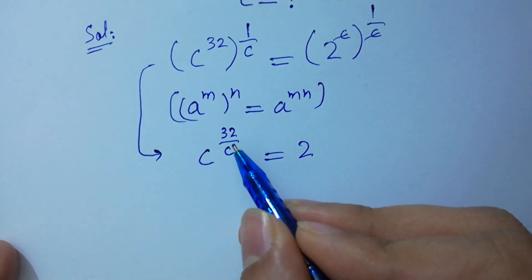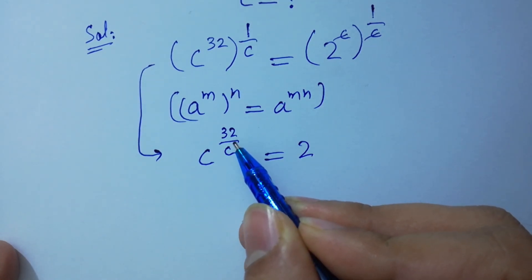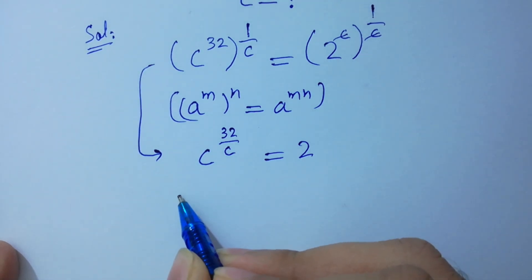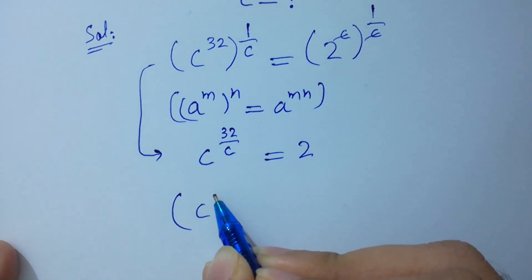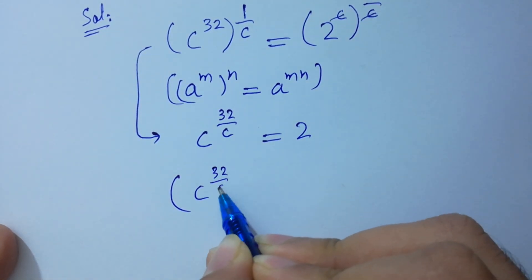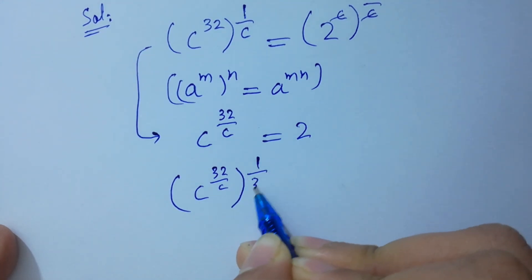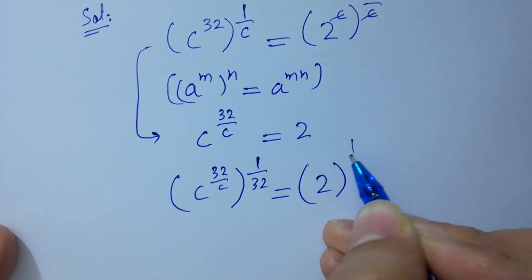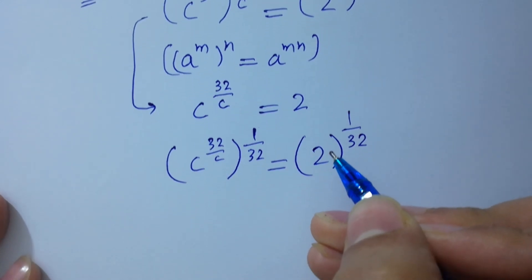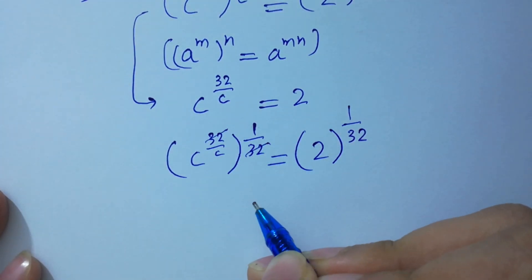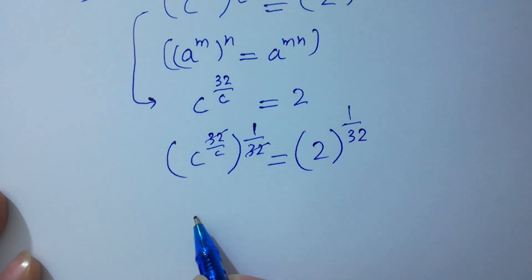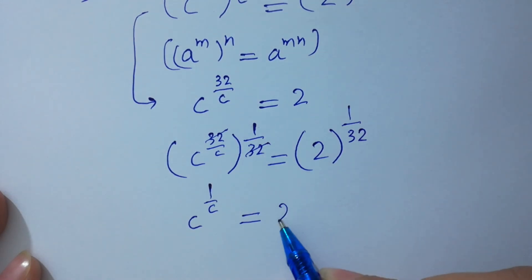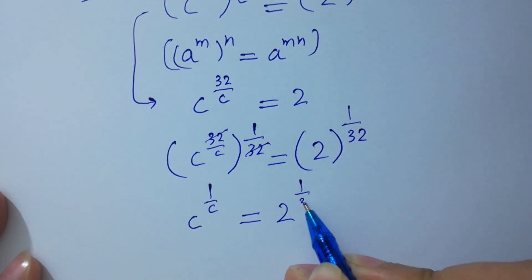Next, to get rid of this 32, take power 1 over 32 on both sides. Here, C to the power 32 over C, to the whole power 1 over 32, equals 2 to the power 1 over 32. Here, 32 and 32 will be cancelled. We get C to the power 1 over C equal to 2 to the power 1 over 32.